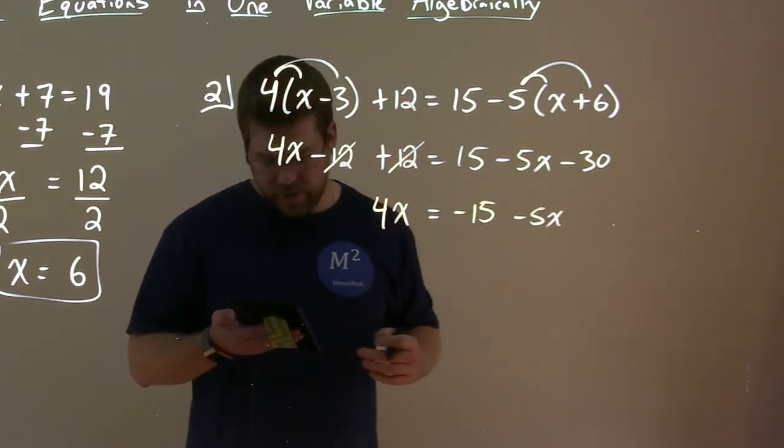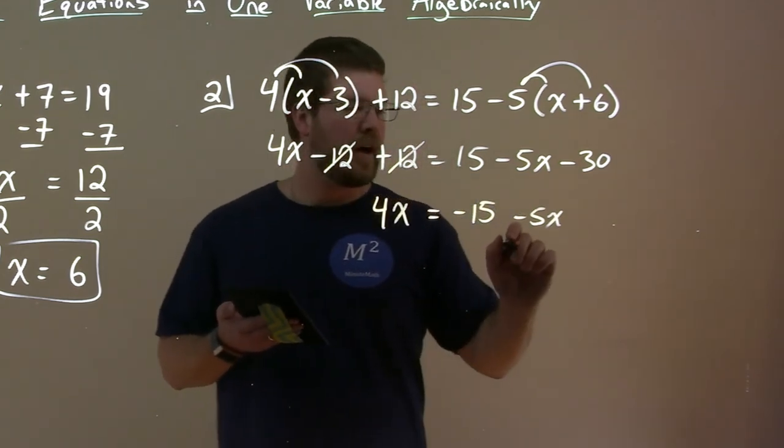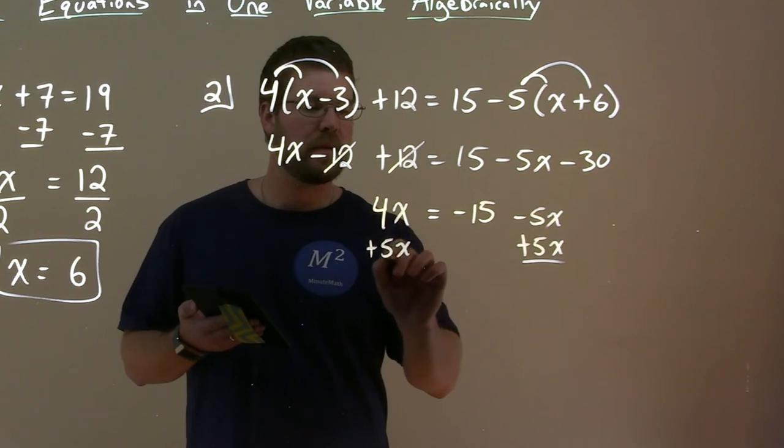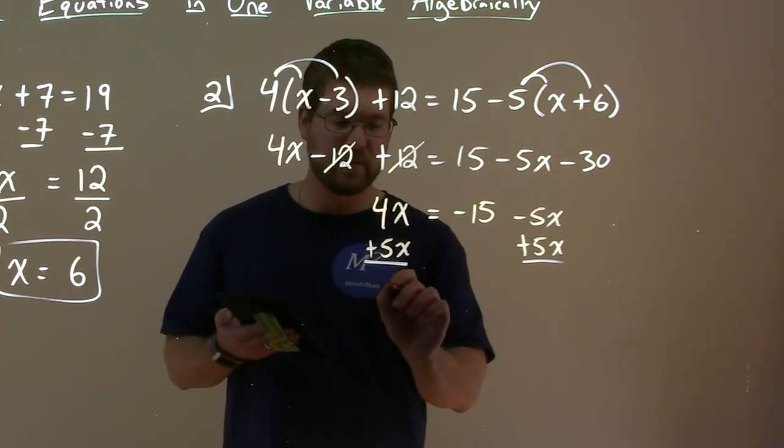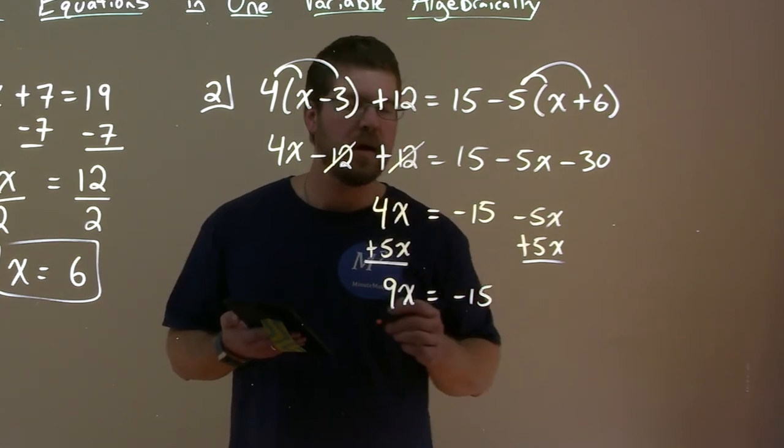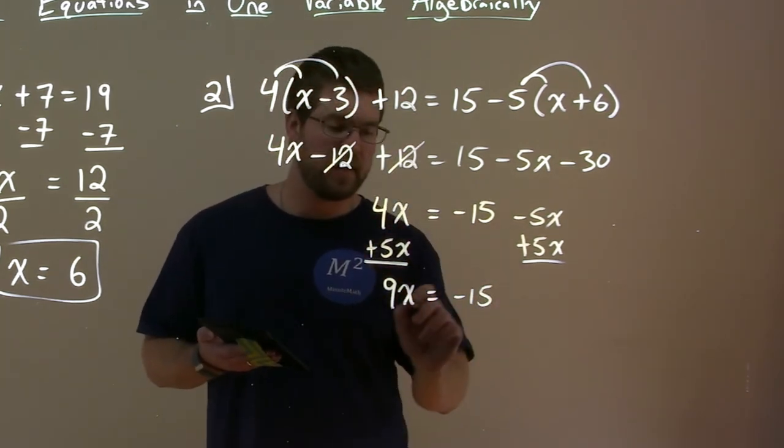All right, we're going to bring all the x's together. So let's add the 5x to both sides. Let's bring it to the left-hand side, and that's 4x plus 5x is 9x. Bring down the minus 15, and now we need to divide by 9 on both sides.